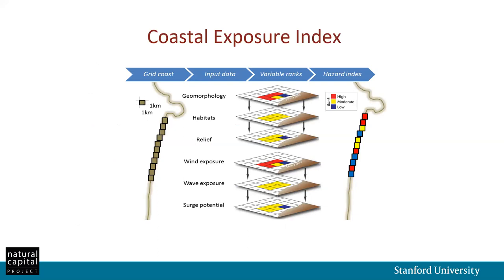This schematic shows a simplified version of how the model works. The first step is to grid up the coastline of the region into a user-defined segment size — in this case, one-kilometer shoreline segments. Each of the different input data are gridded up to the same resolution and ranked, either using absolute user-defined ranks for some variables or ranks assigned by the model based on the full distribution of values.